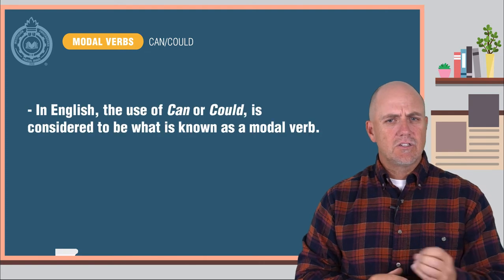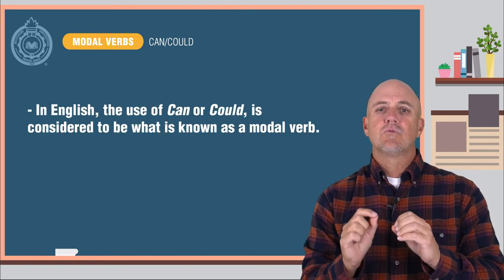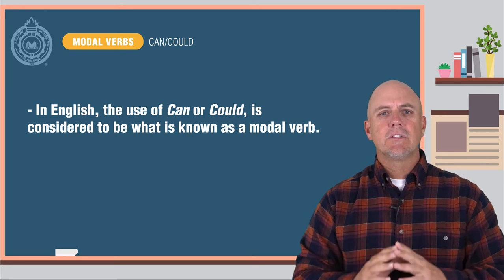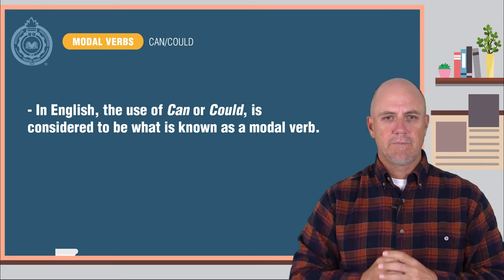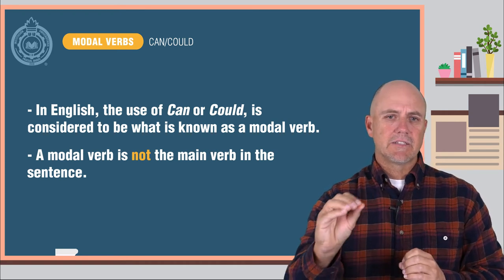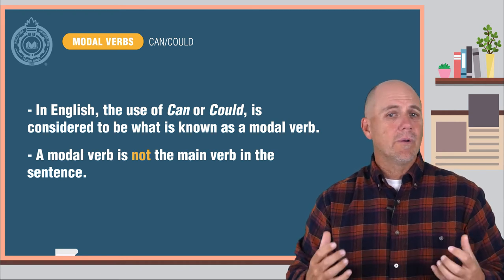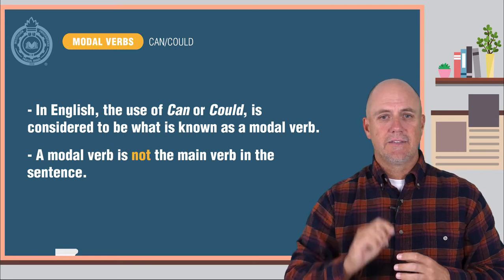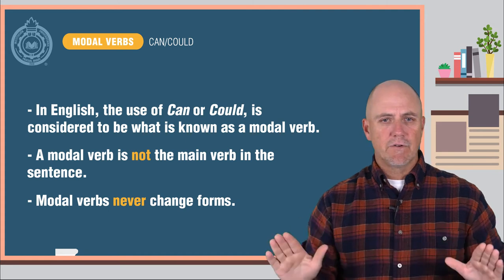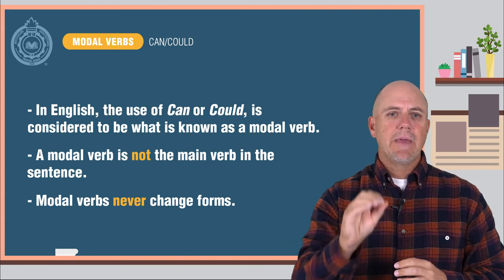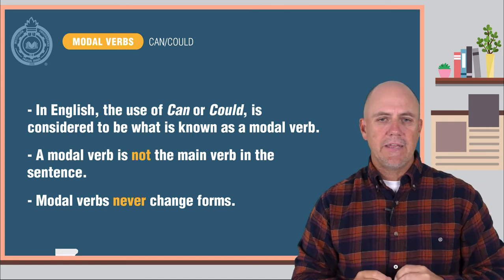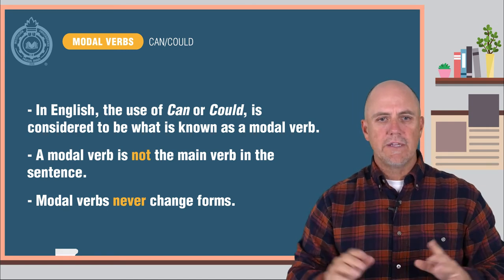In English, the use of can or could — which is represented by the verb poder in Spanish — is considered to be what is known as a modal verb. A modal verb is simply a verb that expresses possibility, necessity, or ability. It is not the main verb in the sentence. Modal verbs never change forms. It doesn't matter what the subject is — they do not change form based on the subject.